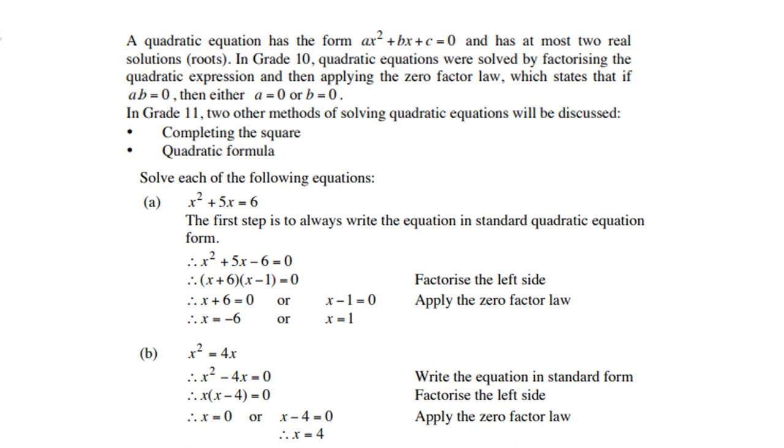Solve each of the following equations. Let's look at x² + 5x = 6. The first step is to always write the equation in standard quadratic form, so the 6 must come to the left-hand side. Then factorize: (x + 6)(x - 1) = 0. Set each bracket equal to zero, so x = -6 or x = 1.